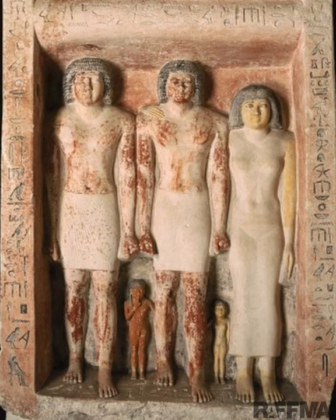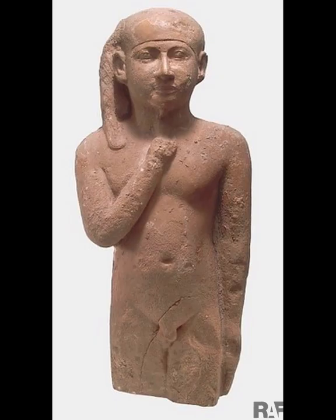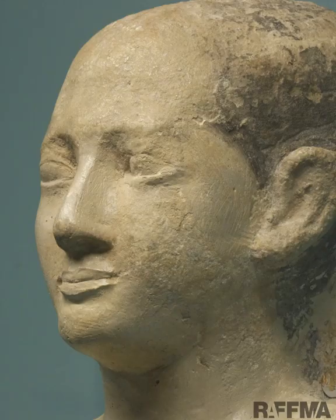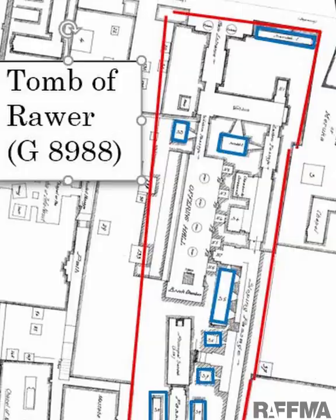The statue base fortunately gives the names of all of the family members depicted. We learn that the name of Hetepheres' brother and her father was both Rawer, and Hetepheres was apparently named after her paternal grandmother, who was also called Hetepheres. The girl's father, Rawer, is a well-known person from Egypt's 5th dynasty.